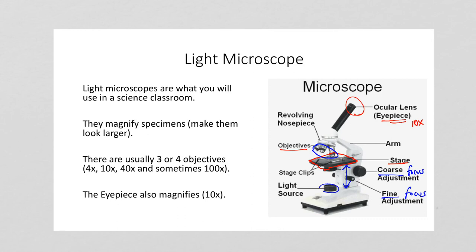So again, we've got the eyepiece. We've got the objectives—in this photo there's three of them. We've got the stage that the slide of the specimen sits on. And then we've got our larger dial, which is the coarse focus adjustment, and the smaller one is the fine focus adjustment.